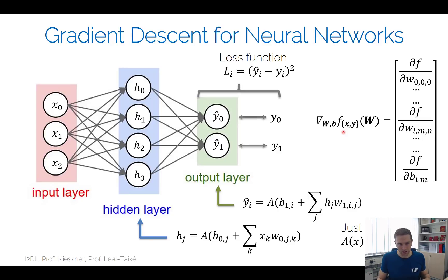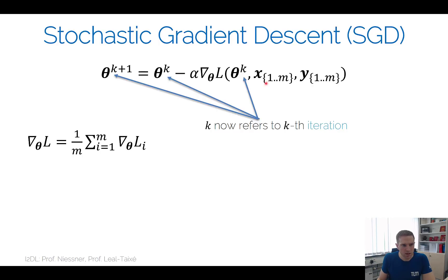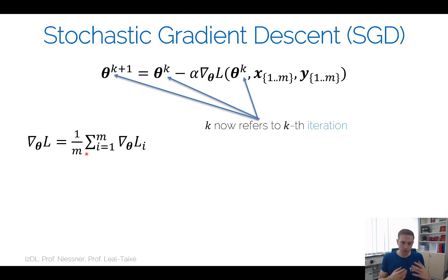Backpropagation became costly when the training set was large, so to make it computationally feasible we introduced SGD — stochastic gradient descent. In SGD, we have our training set going from 1 to m, and the idea is that we don't use the entirety of the training set but rather take a mini-batch, a random subset. After one epoch we've visited every training sample exactly once, dividing the training set into mini-batches.